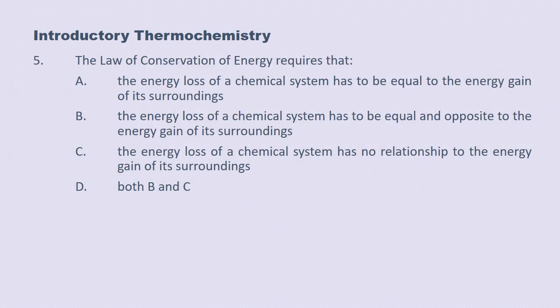I believe this is our last question. The law of conservation of energy requires that... The energy loss of a chemical system is equal to the energy gain of its surroundings. A. Well, no, that's not true. The energy loss of a chemical system has to be equal to and opposite the energy gain of the surroundings. So the answer is B. The energy loss of a chemical system has to be equal and opposite the energy gain of its surroundings. Yes, the answer is B.